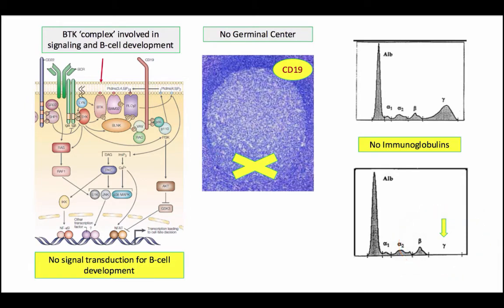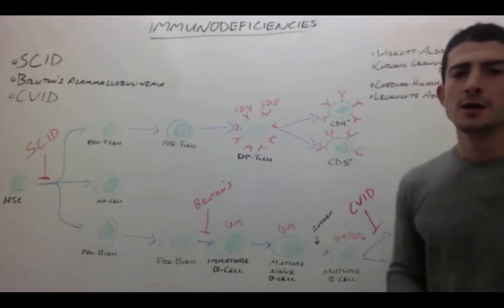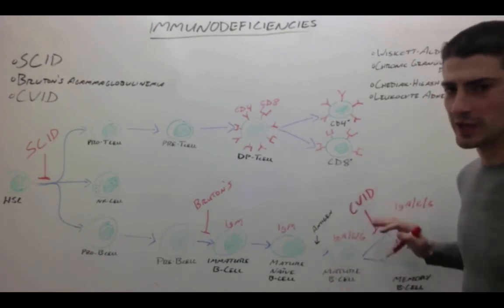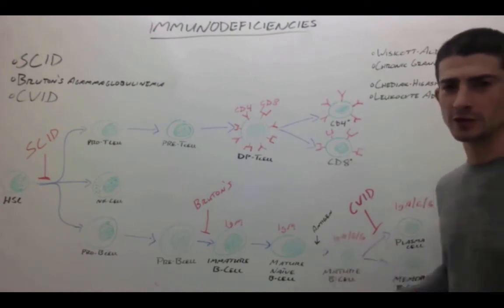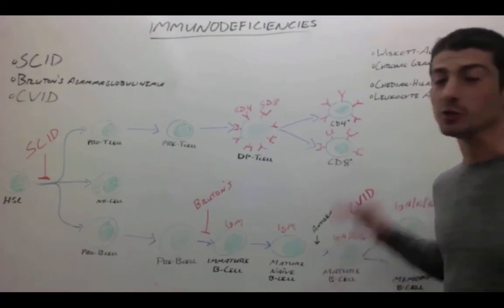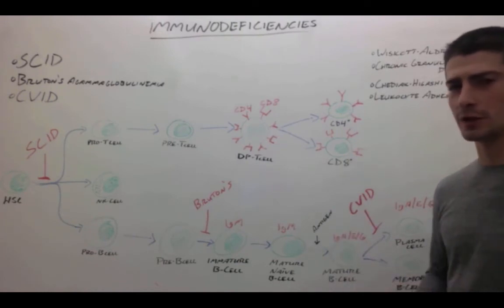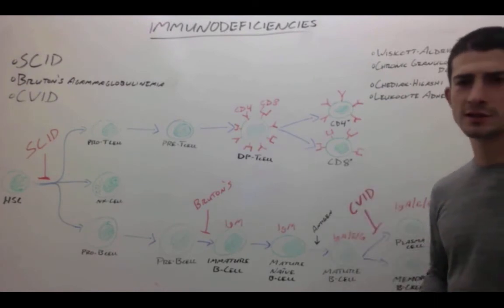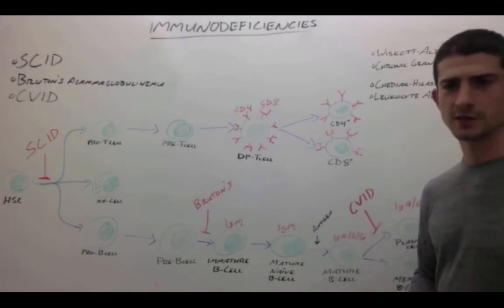Let's move on to common variable immunodeficiency. CVID is a problem with the final step of maturation of a B cell. You have the class switching, but the cell is not able to mature into a plasma or memory B cell. As a result, you have reduced levels of circulating immunoglobulins of IgG, IgA, and IgE. You may have normal or even elevated levels of IgM. CVID likely has a genetic component that's not well understood, but it's often acquired in an individual's 20s or 30s, and it can result in an increased risk of autoimmune disorders, lymphoma, and infections.